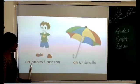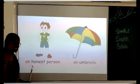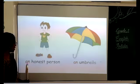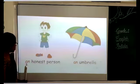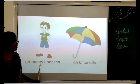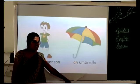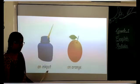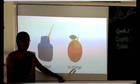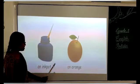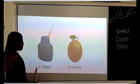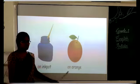Now listen carefully. H is a consonant letter, but sometimes H is silent. When H is silent, we pronounce the vowel sound, so we use AN before it. For example: an honest person, an umbrella, an orange. Here the sounds I, U, and O are vowel sounds, so we use AN before these words.